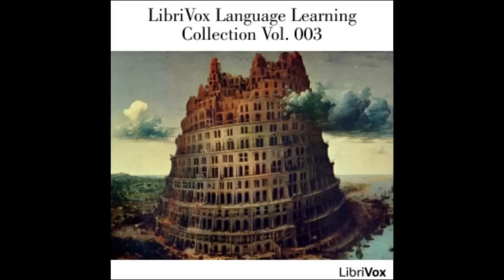Lesson 24 — Personal pronouns. First person singular: nominative ἐγώ (I); accusative ἐμέ or με (me); genitive ἐμοῦ or μου (of me); dative ἐμοί or μοι (to me). Second person singular: nominative σύ (thou); accusative σέ (thee); genitive σοῦ (of thee); dative σοί (to thee).